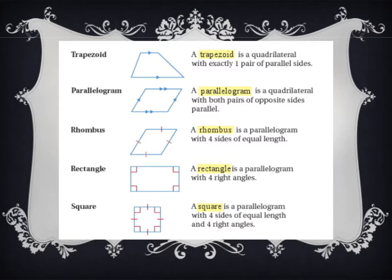We have lots of different kinds of quadrilaterals here. First of all, we have a trapezoid. A trapezoid is a quadrilateral with exactly one pair of parallel sides. We know that parallel means that they are exactly the same distance apart and they go on forever. It only has one pair of parallel sides, and that makes it a trapezoid. Please make sure that you're getting this vocabulary down in your notebook and that you know what these words mean.